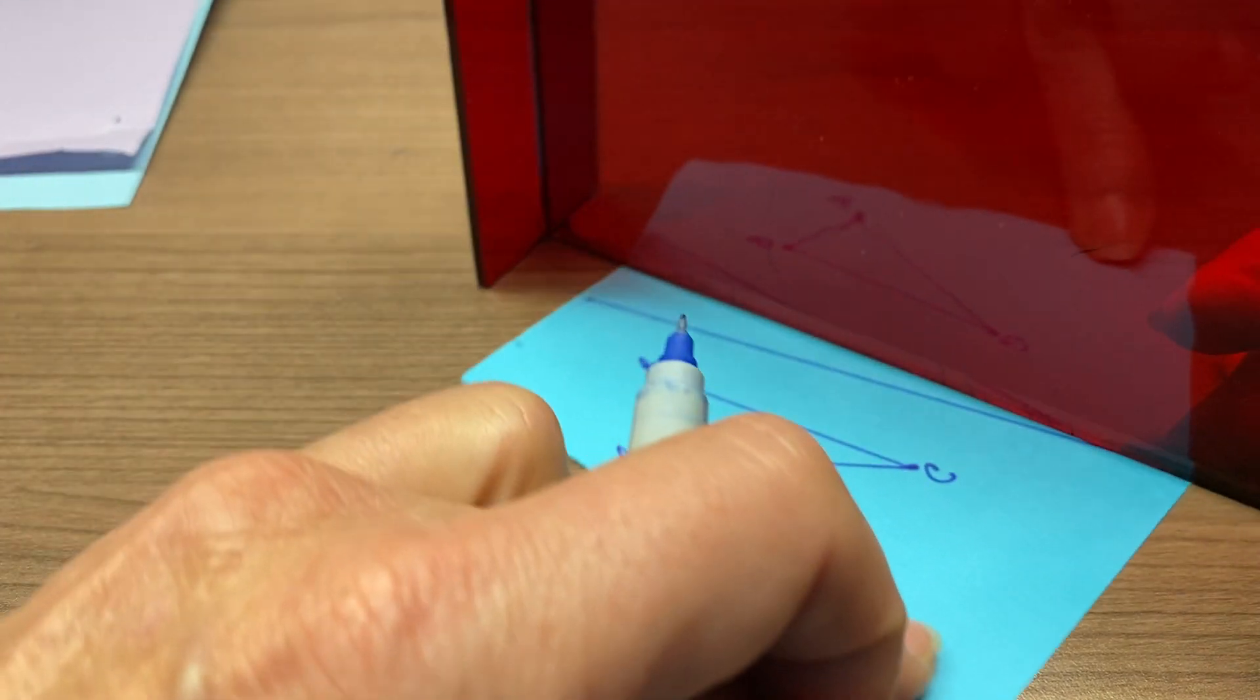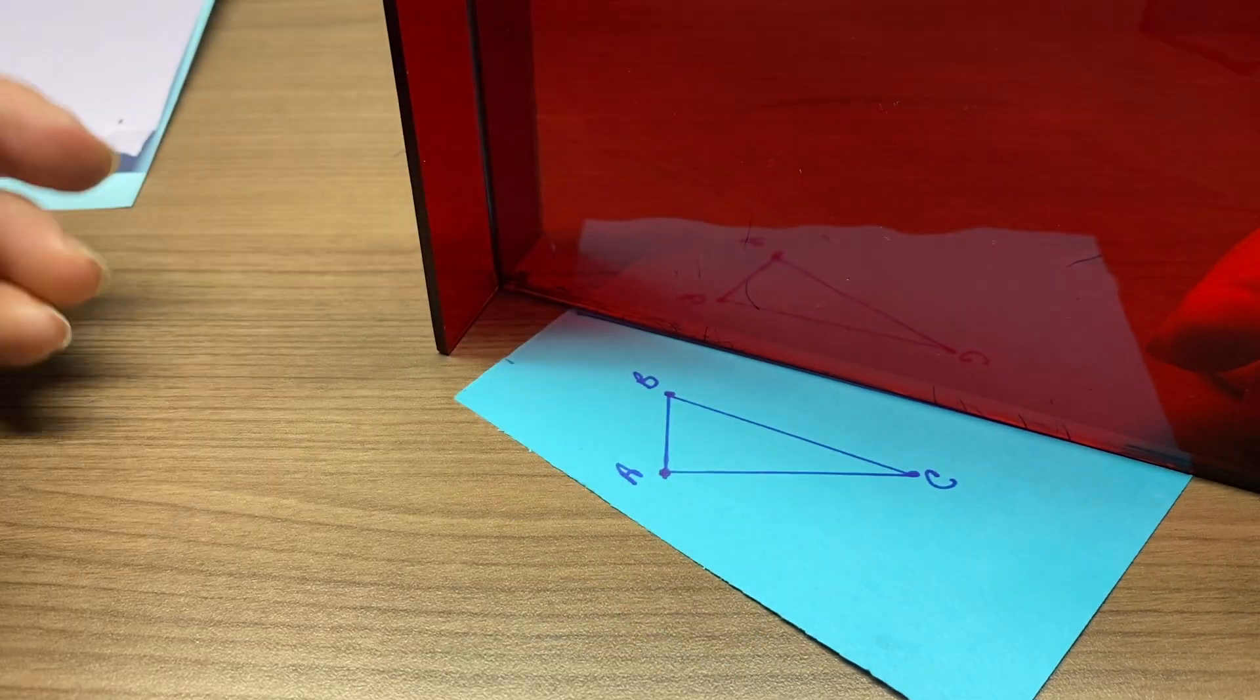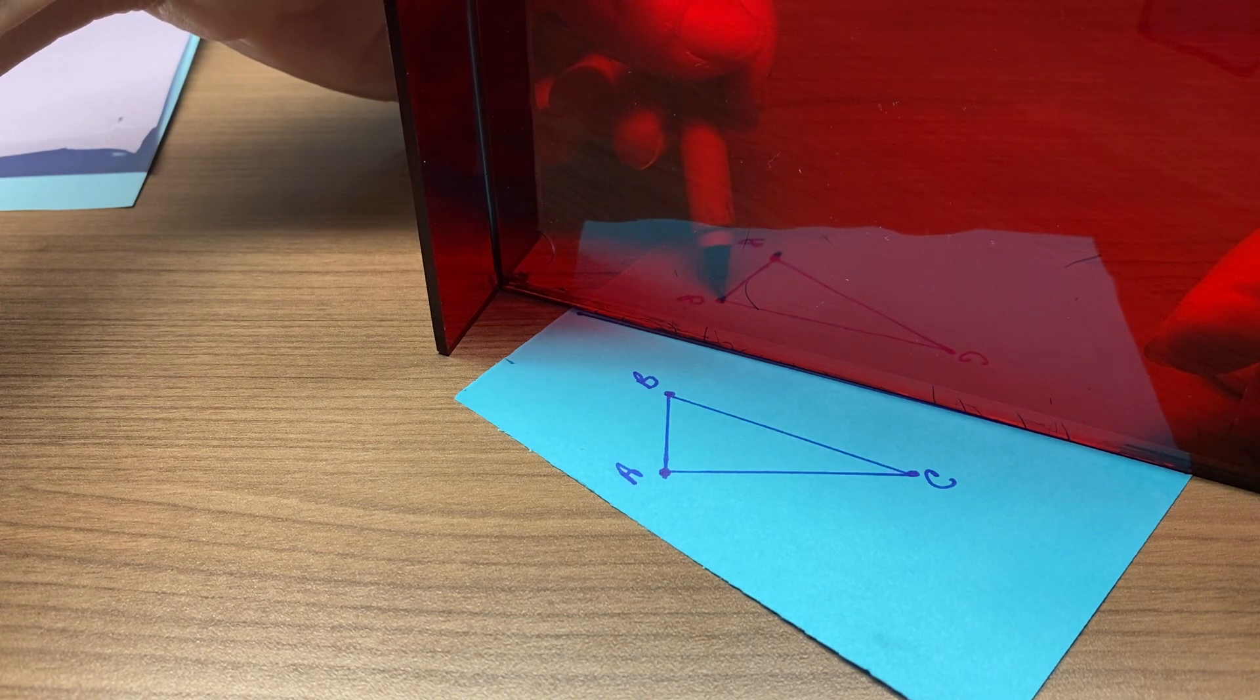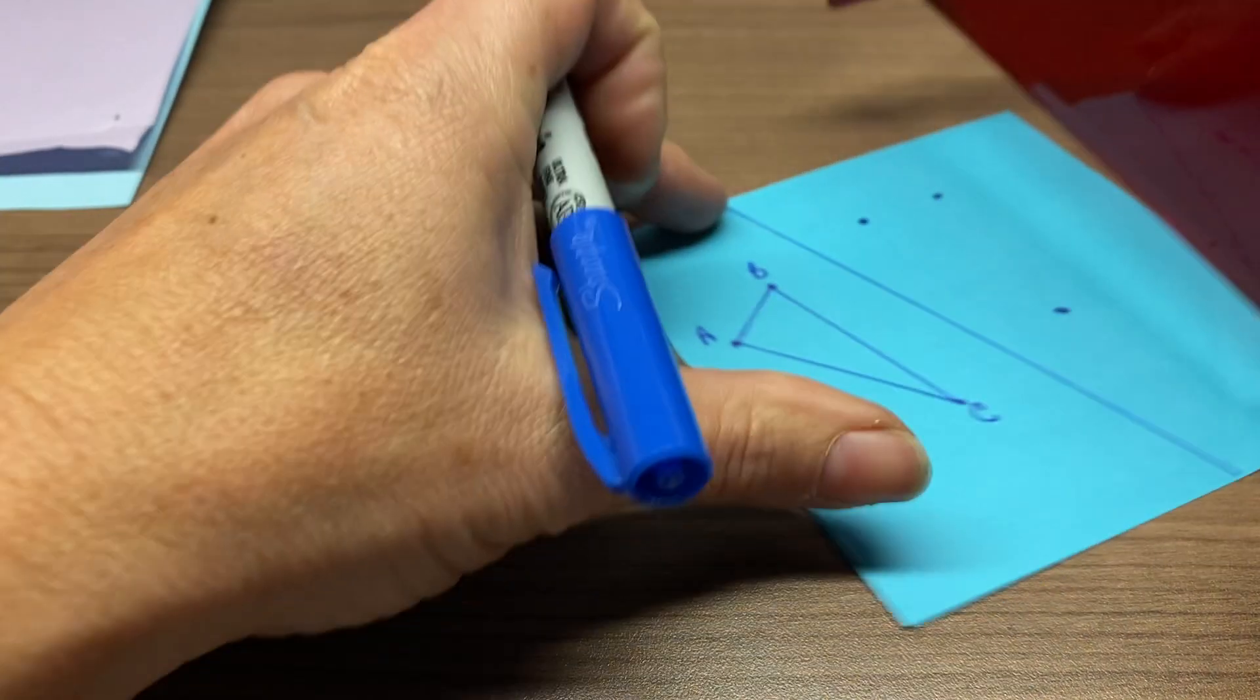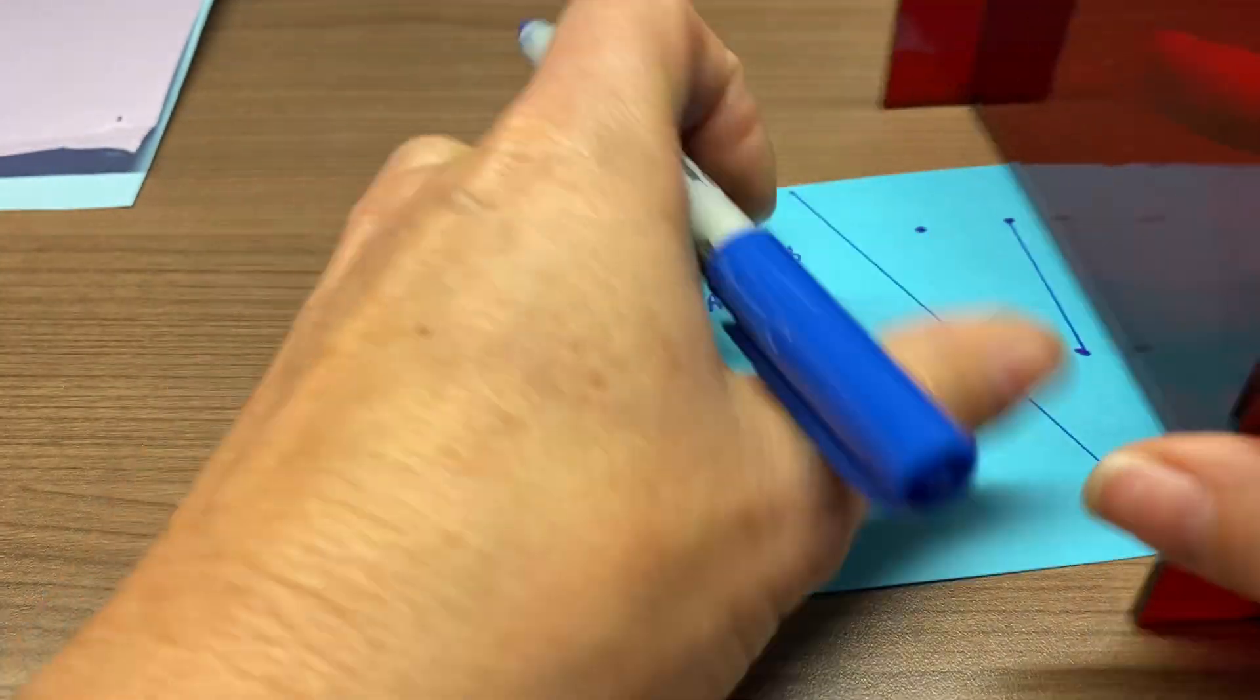So you can see that we can spot through the pane where our vertices go. Simply mark those, and then when you move to the other side, connect those dots, and you will have your image figure.